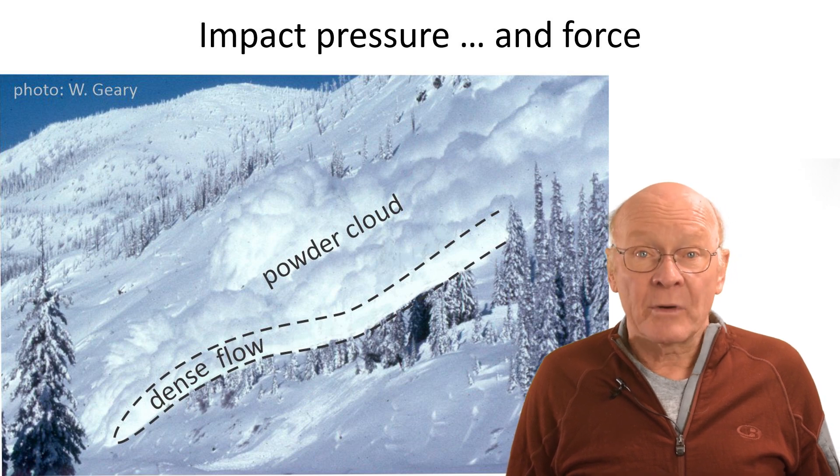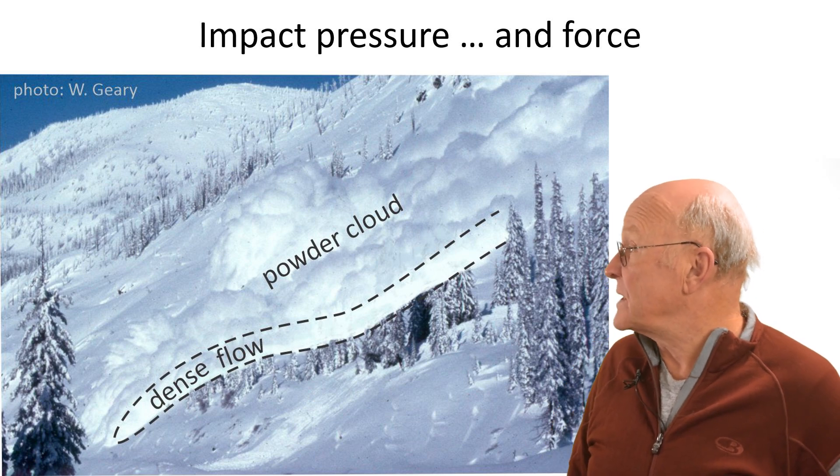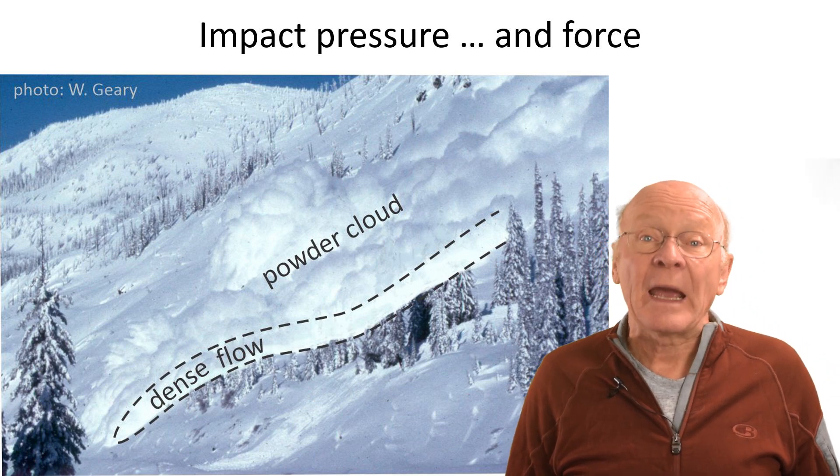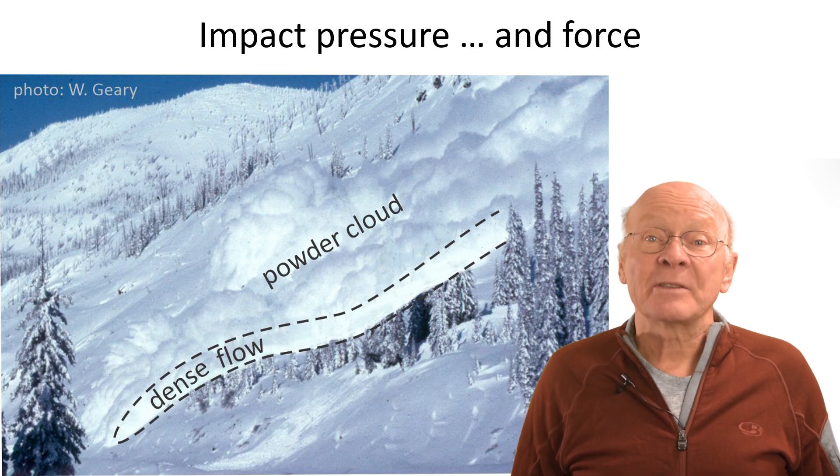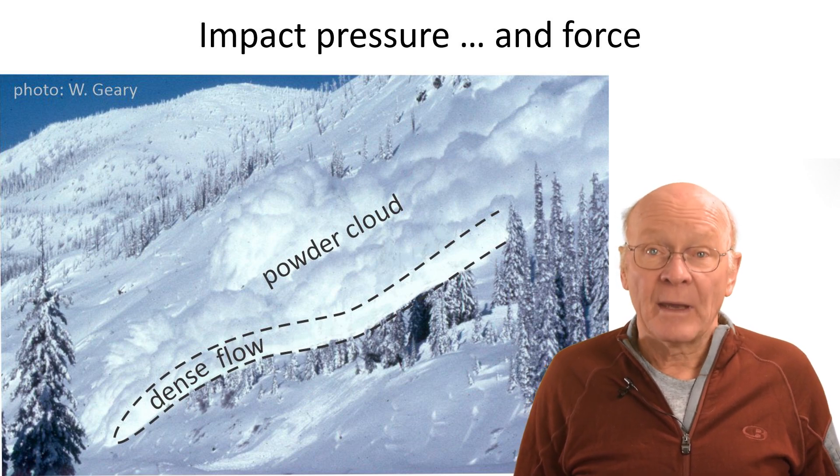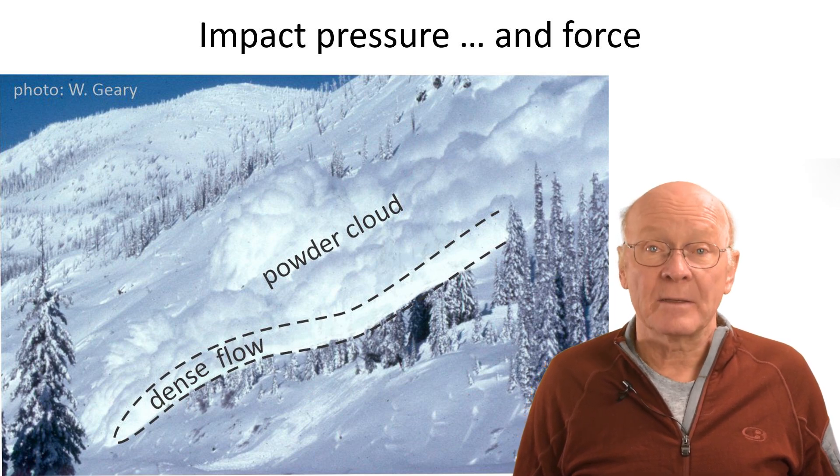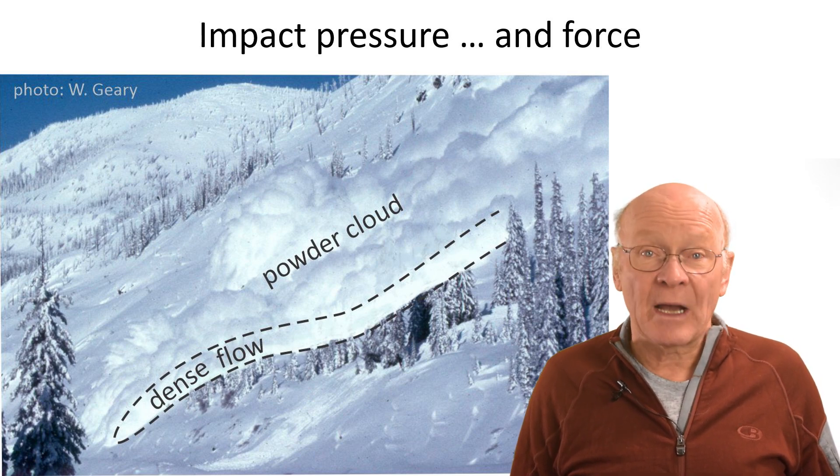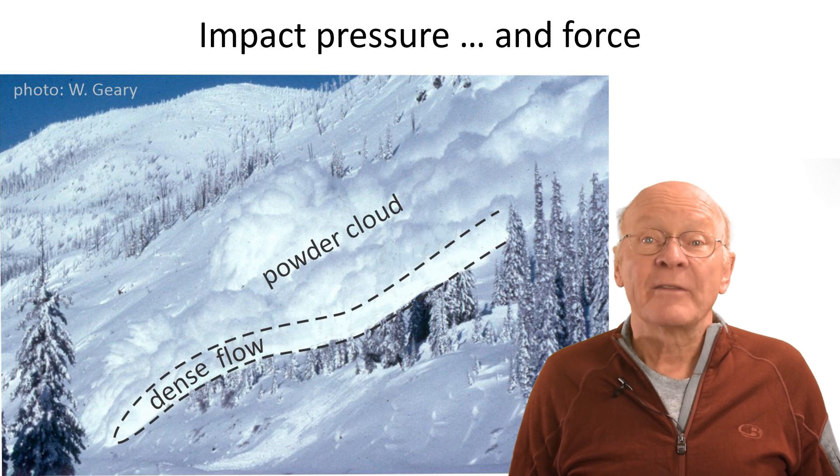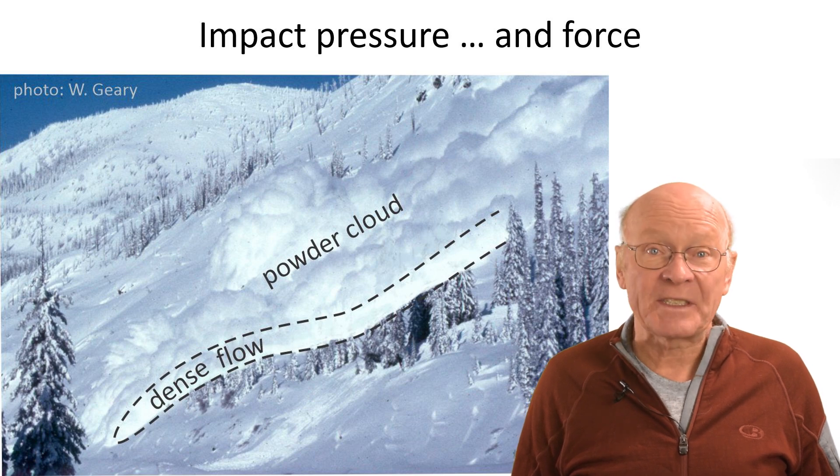To better understand the impact force and destructive potential, let's assume the powder layer of this avalanche has a flow density of about 3 kilograms per cubic meter, and the dense layer has a flow density of about 200 kilograms per cubic meter, which is about 60 times higher. Since the speeds of these layers along the slope are similar, the impact pressure from the powder layer is less than two percent of the impact pressure from the dense layer. However, the impact force from the powder layer on an object over 30 meters high could be a third of the impact force from a 1.5 meter thick dense layer.